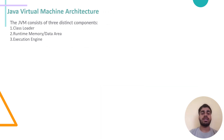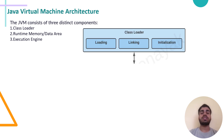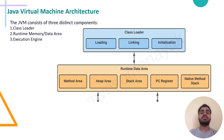Now let's see how JVM works internally. The JVM is divided into three subsystems. The first subsystem is the class loader subsystem. It consists of three activities: loading, linking and initialization. The second subsystem is the runtime data area. Whenever JVM runs an application, it requires memory to store metadata of classes, objects and other information. JVM organizes this into five data areas: method area, heap area, JVM stack, PC register and native method stack.